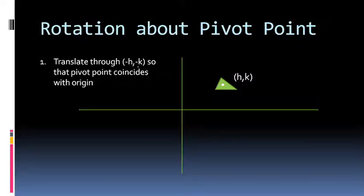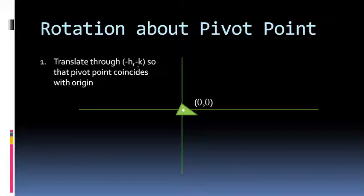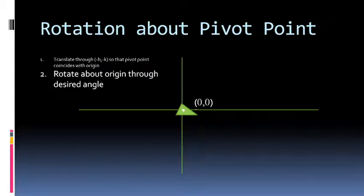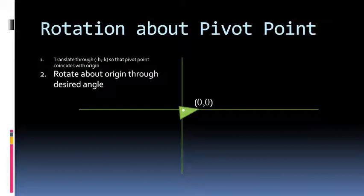This translation will shift your triangle so that the pivot point now coincides with the origin. In the second step, you rotate the triangle about the origin through the desired angle, because the pivot point has now coincided with the origin. So this rotation is similar to a standard rotation about the origin.